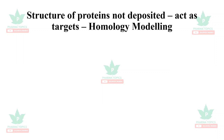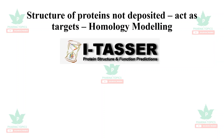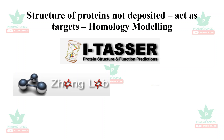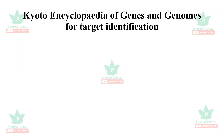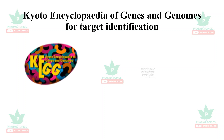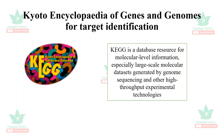For homology modeling — if you have a protein sequence but not a structure — you can search for proteins and build a model using I-TASSER, a protein structure and function predictor from the Zhang Lab at the University of Michigan. The KEGG (Kyoto Encyclopedia of Genes and Genomes) is a database resource for molecular-level information, especially large-scale molecular datasets generated by genome sequencing and high-throughput experimental technologies.